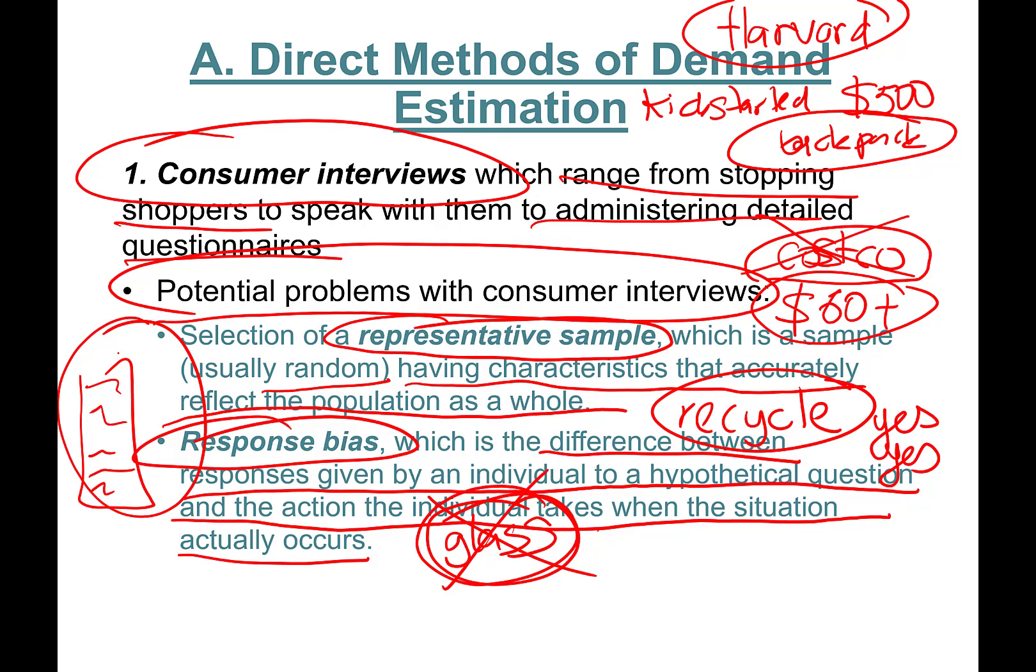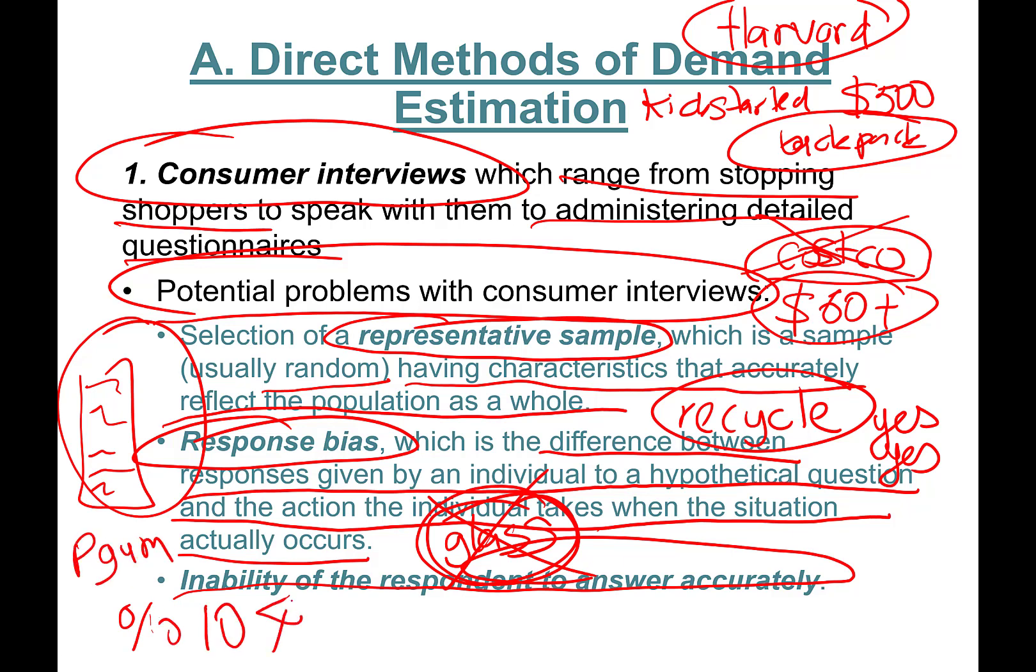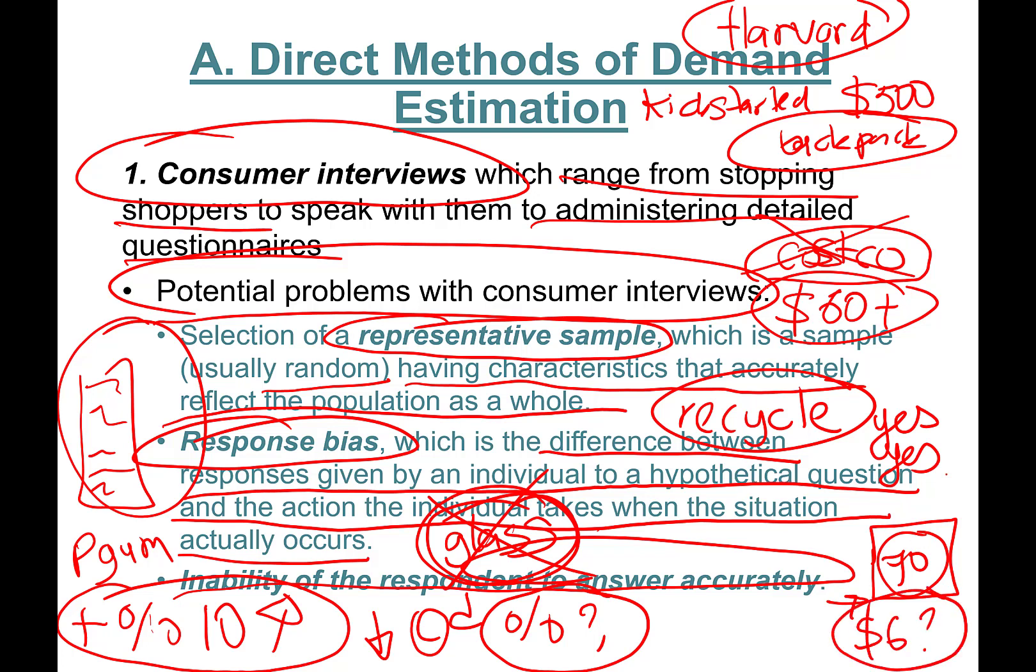That's the response bias. The last one is the ability of the respondent to answer accurately. They may ask me: the price of chewing gum goes up by 10%, how much would you drop your chewing gum consumption, by what percentage? I don't know. I don't even know how much the chewing gum currently is. I bought a bag of 70 gums and I've been chewing it for a while. I don't know how much that one costs. Let's say six dollars. If the price goes up to $6.60, I'm not really sure if I would cut my consumption. I'm not sure.